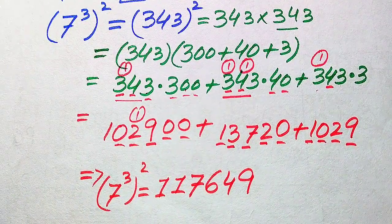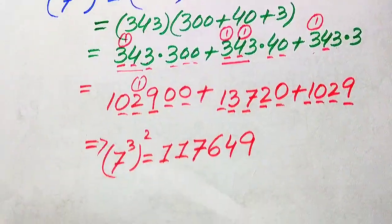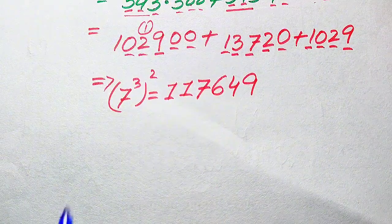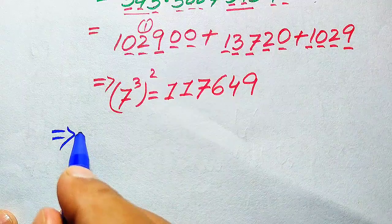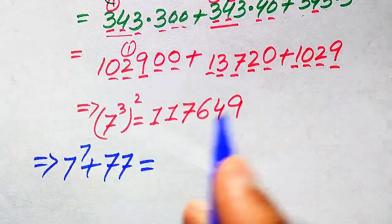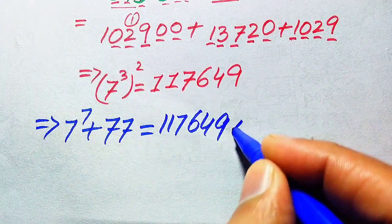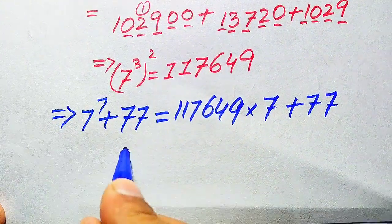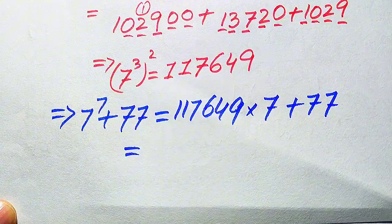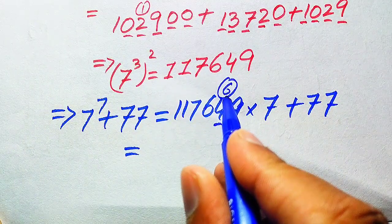We now substitute the value of 7 cubed squared back into the equation. Copying the full expression: 7 to the power of 7 plus 77 equals 117,649 multiplied by 7, plus 77. Our next step is to multiply 7 with 117,649. Working through each digit: 7 nines are 63 — write 3 and carry 6; 7 fours are 28, 28 plus 6 becomes 34 — write 4 and carry 3.